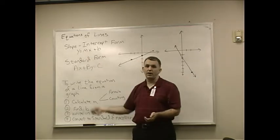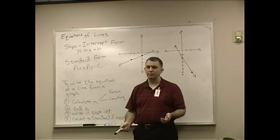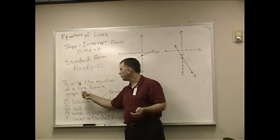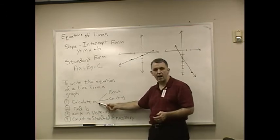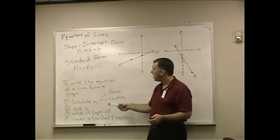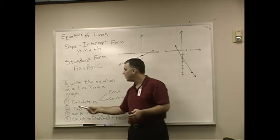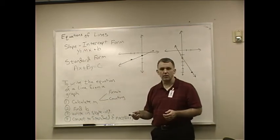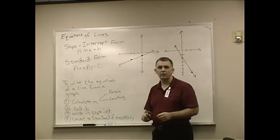Now, when you look at slope-intercept, you need a slope and you need a y-intercept. So, to write the equation of a line from a graph, I have you calculating m, which is the slope. And we can do that from a formula or by counting. Then I have you finding the y-intercept or finding b, and then you just write it in slope-intercept form.